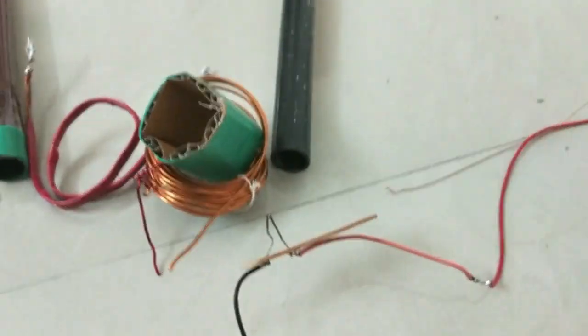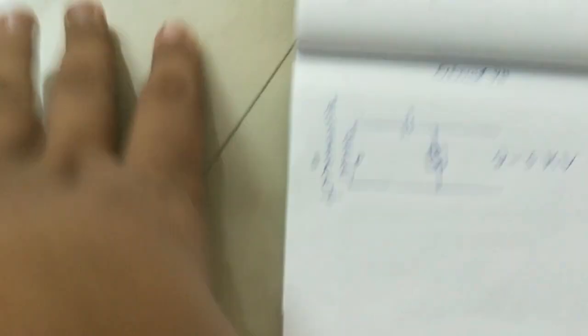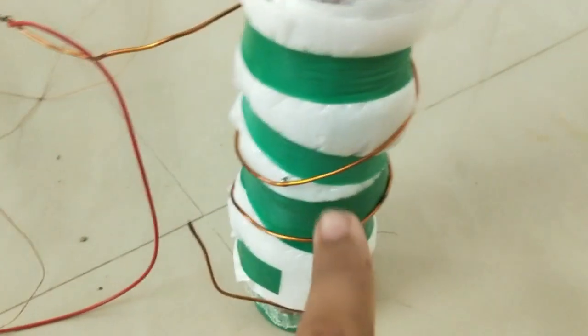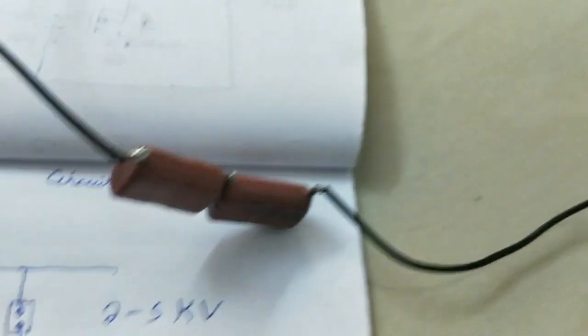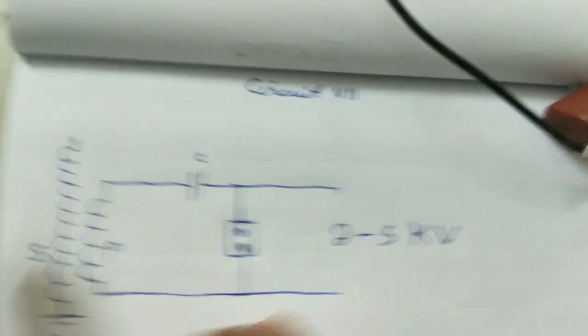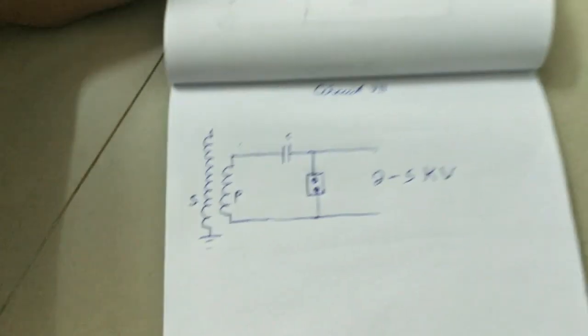I'll show you the circuit diagram. So this is the circuit diagram for this. This is the secondary coil, the large main coil. This is the primary coil, this one. The capacitor and the spark gap, there's the spark gap I'm showing you. This circuit here, and the input voltage is 2 to 5 kilovolt AC. I am using this circuit.